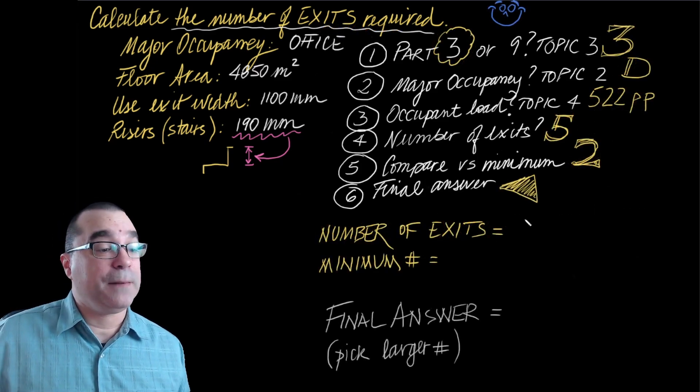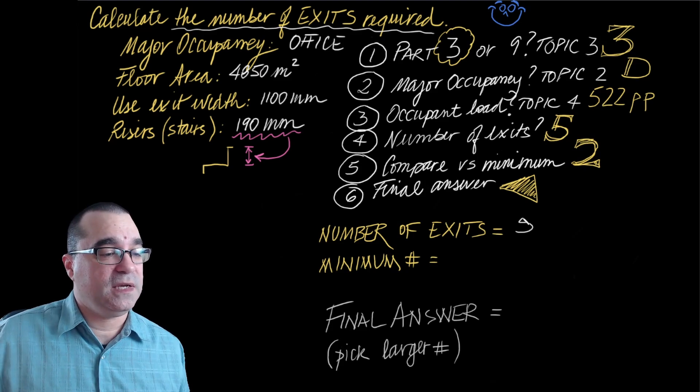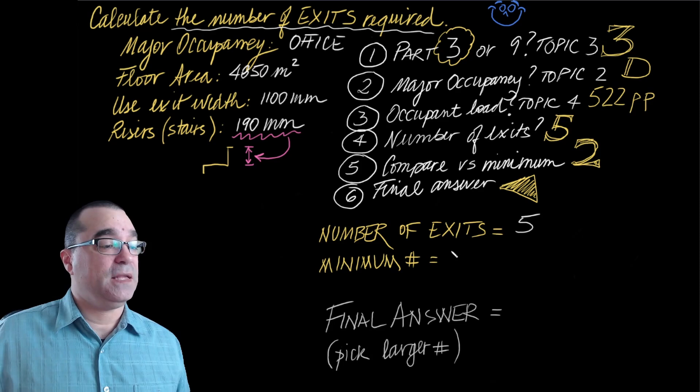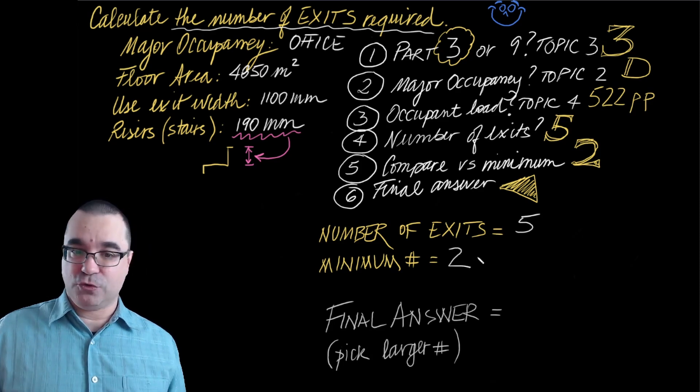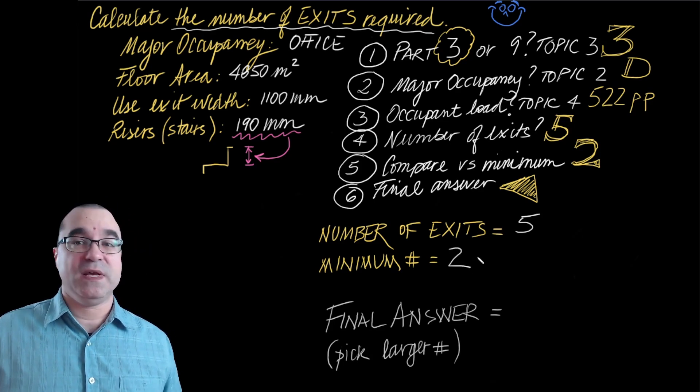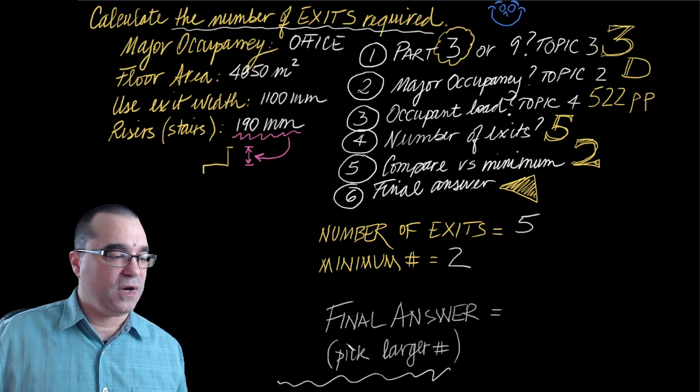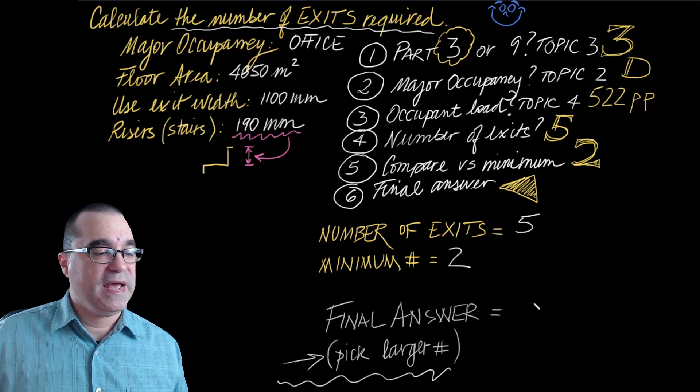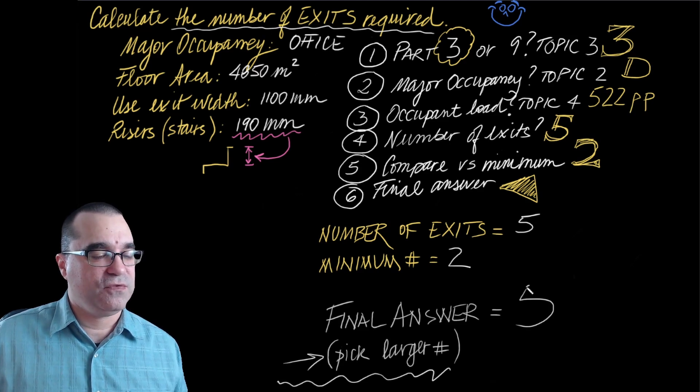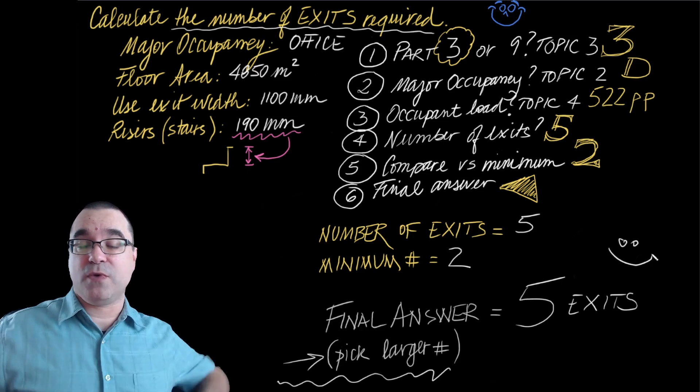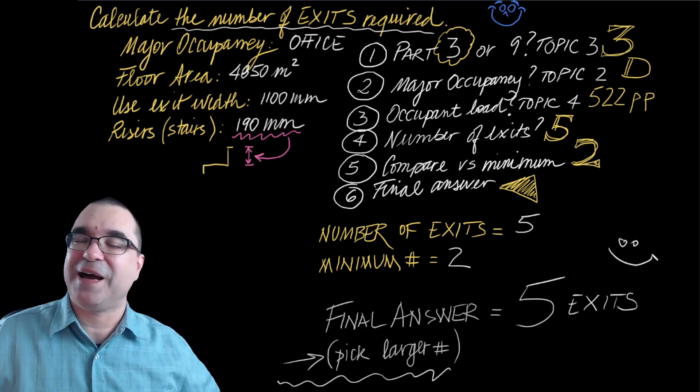So let's move on to step number six to determine what the final answer is to this question. The number of exits to accommodate 522 people is five. The minimum number of exits according to the Ontario building code for this situation is two. So what you do is you pick the larger one of these values right here. And the final answer is five exits. And there you go. We're finished with this question. And you got this. I hope that helps.